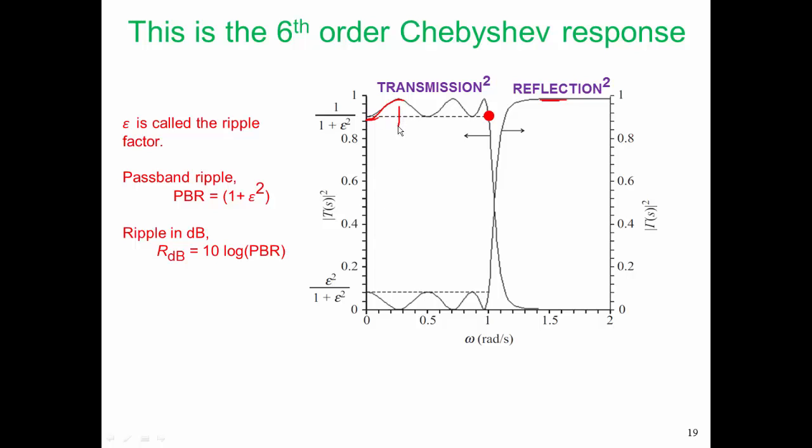This point here is called a pole in the transmission response, and it is a zero in the reflection response.